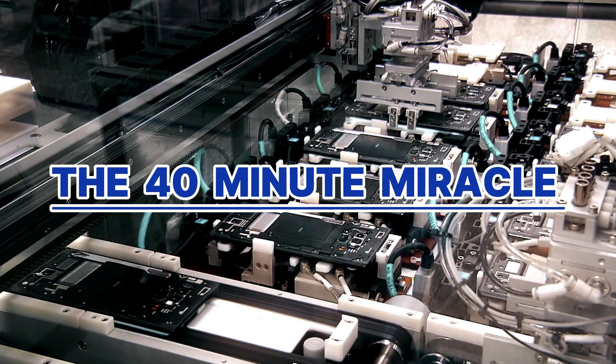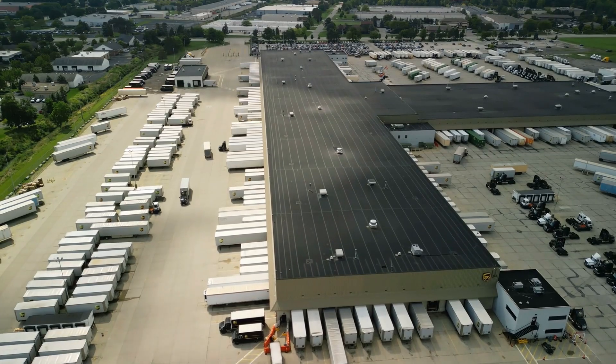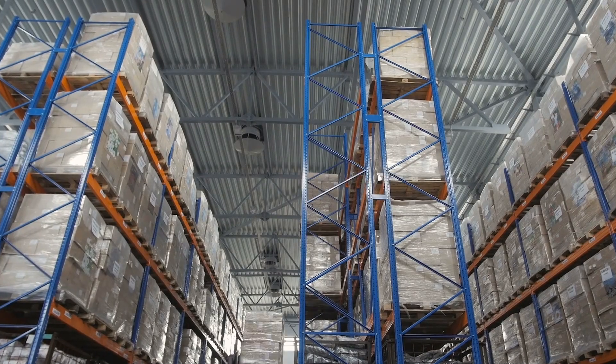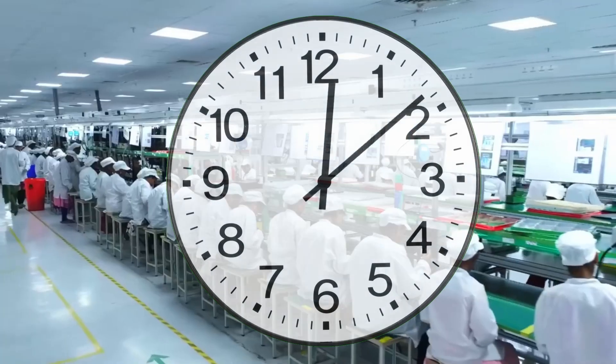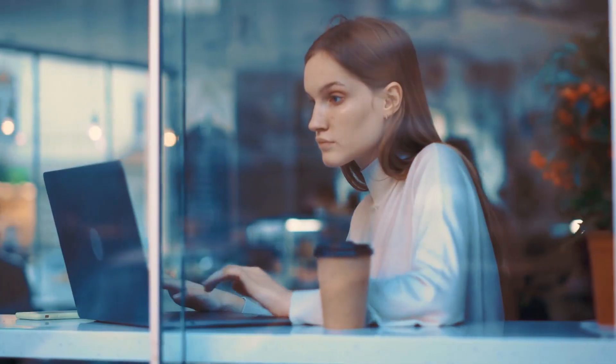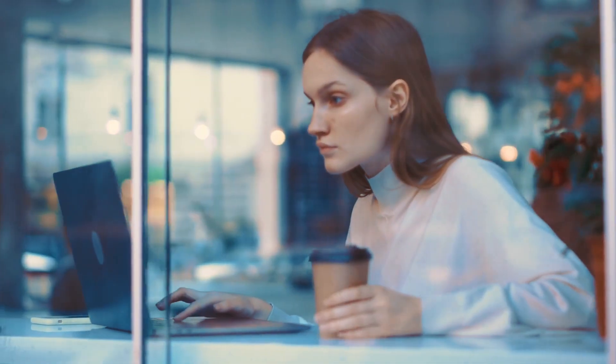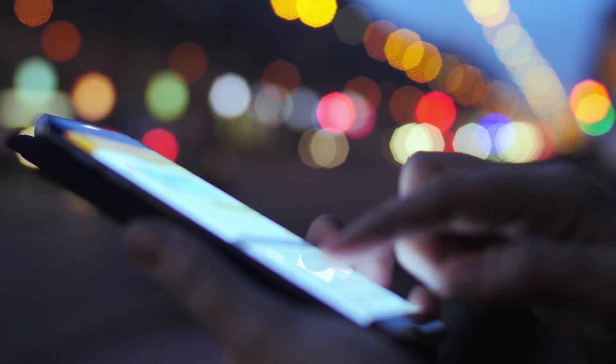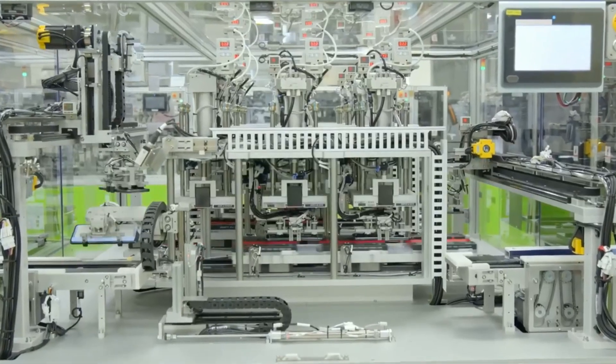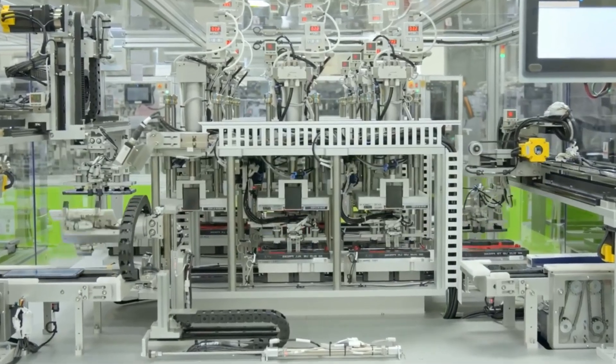Now let me tell you about the most impressive stat of all. From the moment raw materials enter the factory to the second a completed Galaxy phone rolls off the production line. 40 minutes. That's it. In the time it takes you to watch this video and grab a coffee, Samsung has built an entire smartphone from scratch. Each assembly line is 60 meters long, that's longer than half a football field.